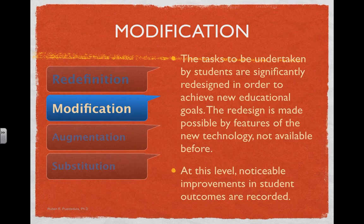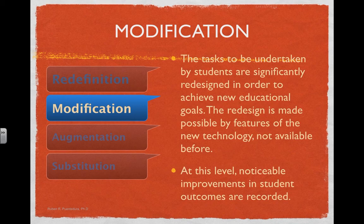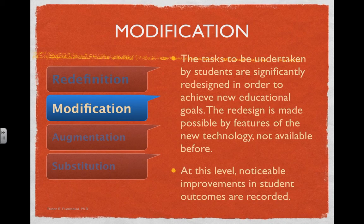Then we slide into modification — the point where we go above the line between augmentation and modification. Here's the significant difference: the tasks undertaken by students are now significantly redesigned in order to achieve new educational goals or to change the way those goals are measured and how students demonstrate what they know. The redesign is made possible because of features of the new technology, perhaps things that weren't available before. This is where students start to show noticeable improvements in achievement — they're asked to think more, put more creativity in, and collaborate more. Technology really starts to change the game of what's possible in the classroom.